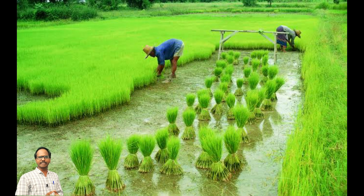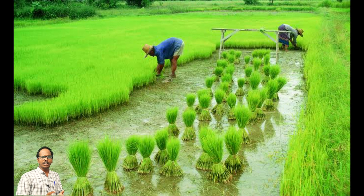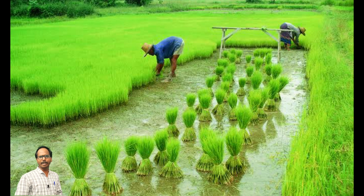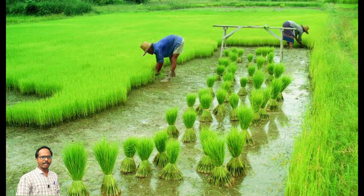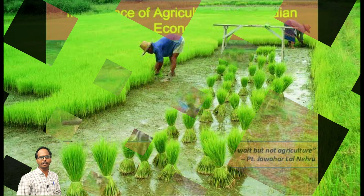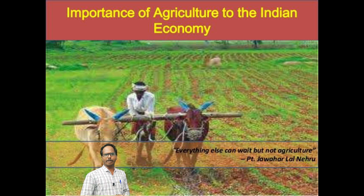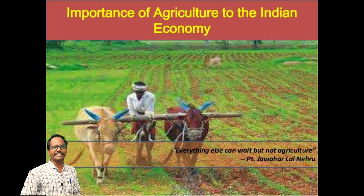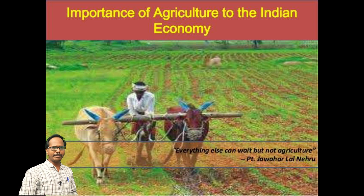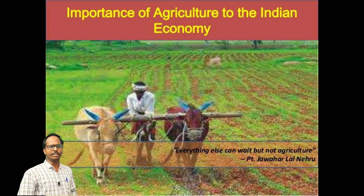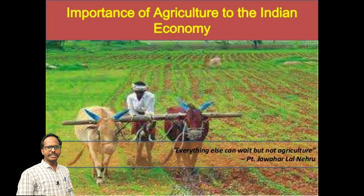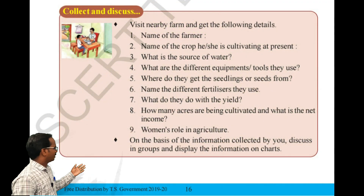If people in villages are not exporting their crops to other places, then people in cities do not get food to eat. There are efforts of many people behind the food we eat. Agriculture, with its allied sectors, is the largest source of livelihood in India. 70% of rural households still depend primarily on agriculture for their livelihood, with 80% of farmers being small and marginal. The agriculture sector provides jobs to around 53% to 60% of the population of India.